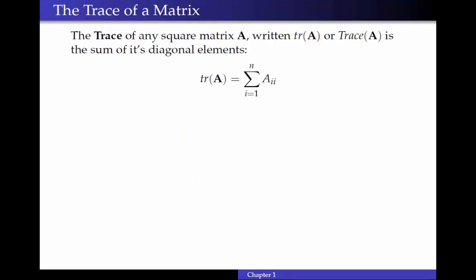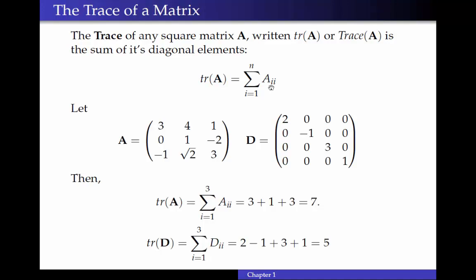And then one calculation that can be done on a matrix is called the trace. And the trace is only defined for square matrices, and it's written either with the full word trace of A or tr of A. And that's just the sum of the diagonal elements. So the trace of A is the sum from I equals one to N of A, I, I. So the element in the I, Ith position.